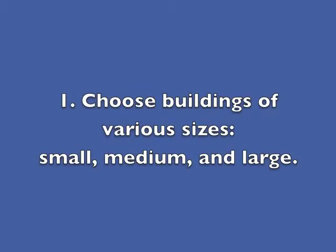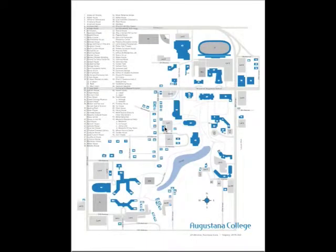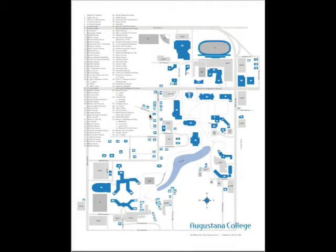The first protocol is to choose buildings of various sizes. A good start is to get a campus map of the campus in which you work, which will show you all the different types of buildings that are available to study. This is a campus map of Augustana College where I work, and you can see there are large buildings, medium-sized buildings, and smaller residential houses that I could choose to study.